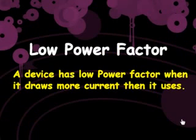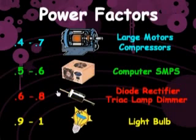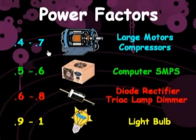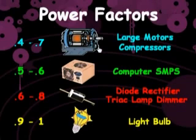A device has low power factor when it draws more current than it uses. A power factor of 0.7 means that 70% of the amps flowing in the electrical wires produce watts that turn this motor's rotor, while 30% of the amps flowing are reactive amps that produce no watts.